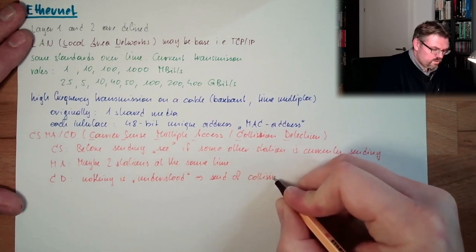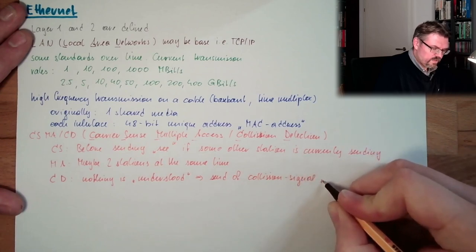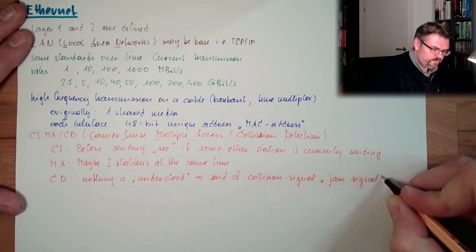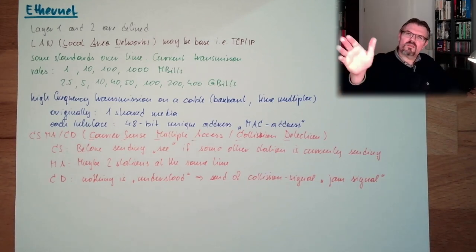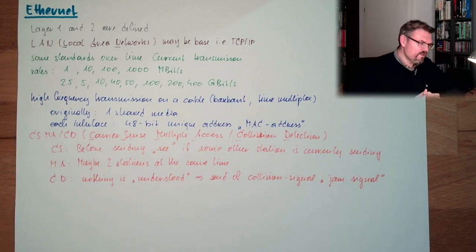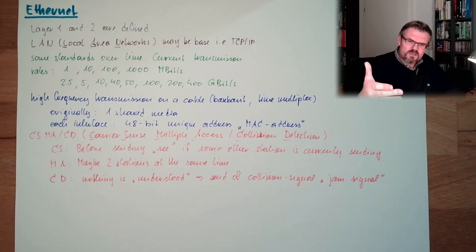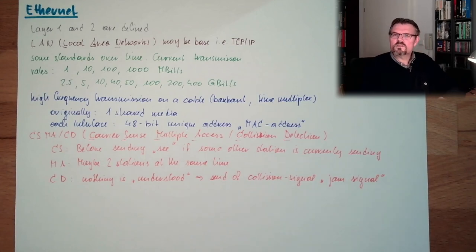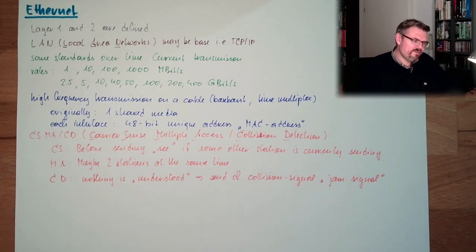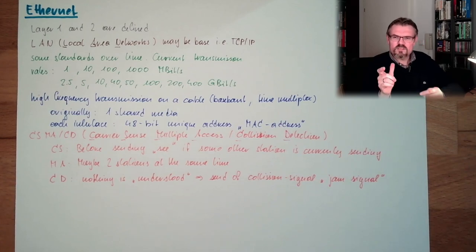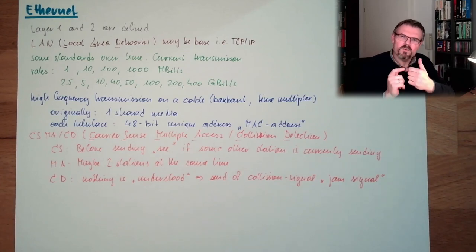When a collision is detected and nothing is understood, a collision signal is sent — the so-called jam signal. This jam signal is signaling to the other stations: hey, there is something going on, there is a jam. However, this jam signal needs to reach the transmitting station in time, so that the transmitting station realizes that somebody else is talking as well. This means the jam signal must arrive before the sender has finished sending.